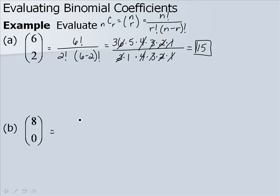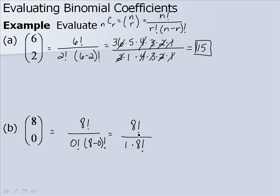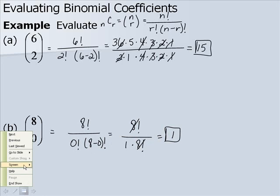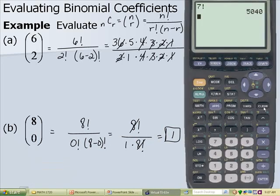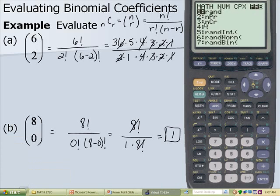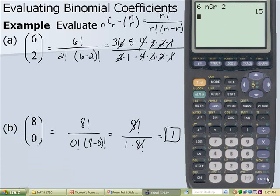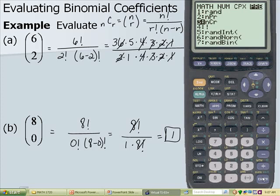Now let's evaluate 8 choose 0. We'll have 8 factorial over 0 factorial times 8 factorial. Remember, 0 factorial is 1, so these will cancel and we'll get 1 for our answer. On the calculator, we type in our value for n first, then press math, arrow over to PRB, and number 3 is our nCr. We press 3, type in our r value, and hit enter. We get 15 for 6 choose 2, and 1 for 8 choose 0.